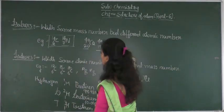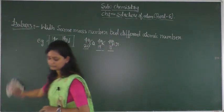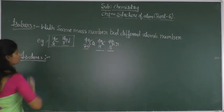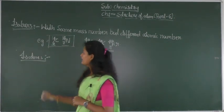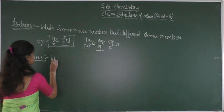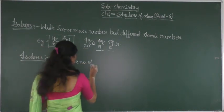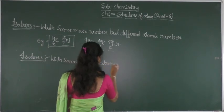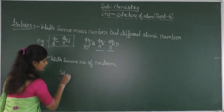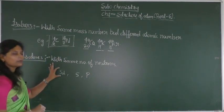Next we will discuss isotones. Isotones are elements which have the same number of neutrons. Such species are called isotones. Here the example is silicon, sulfur, and phosphorus.